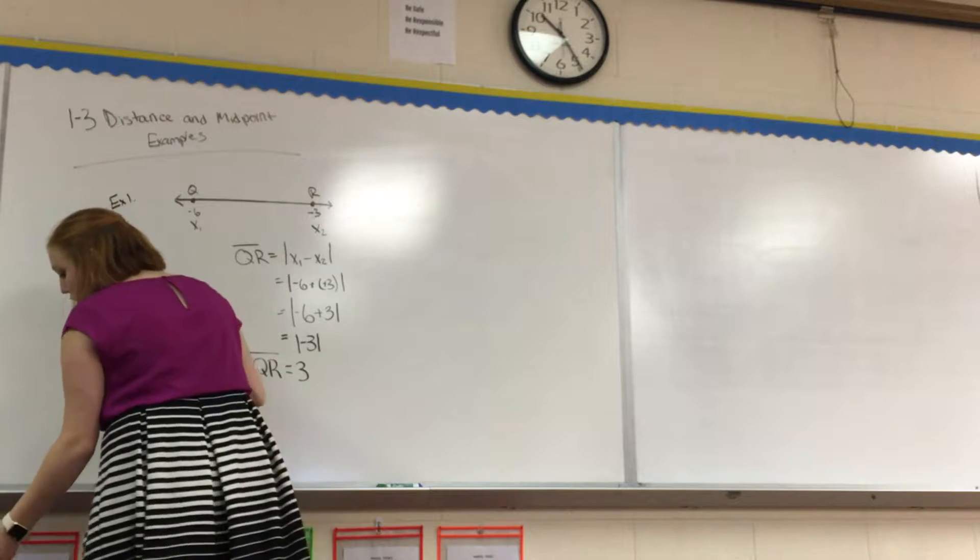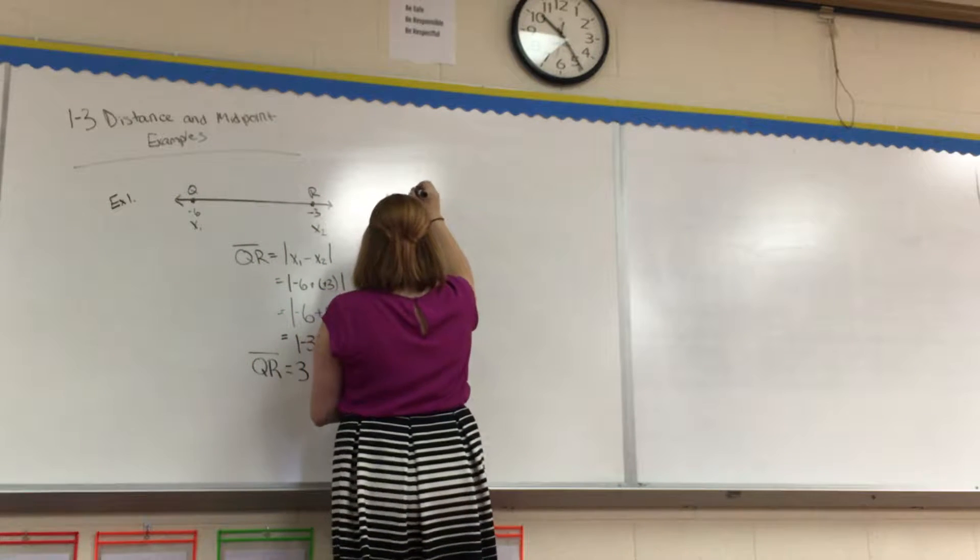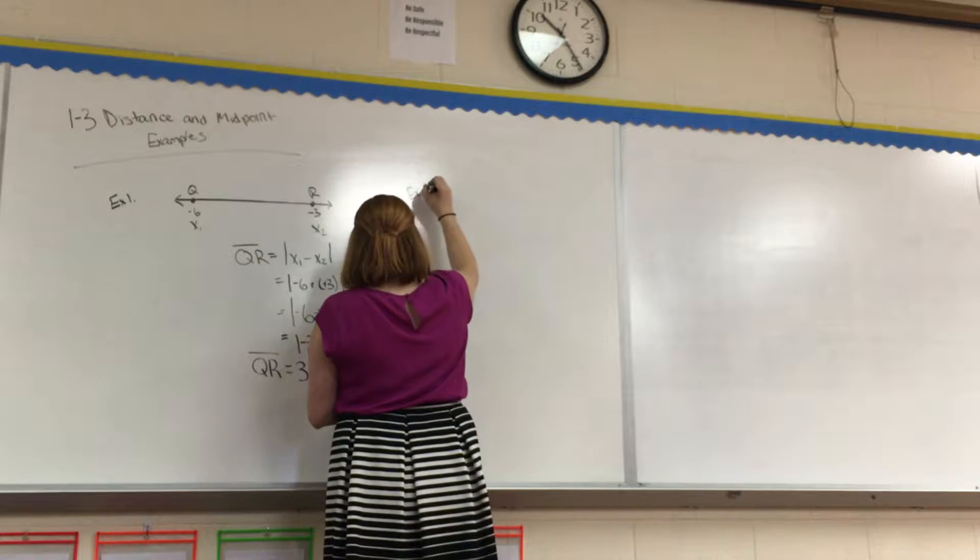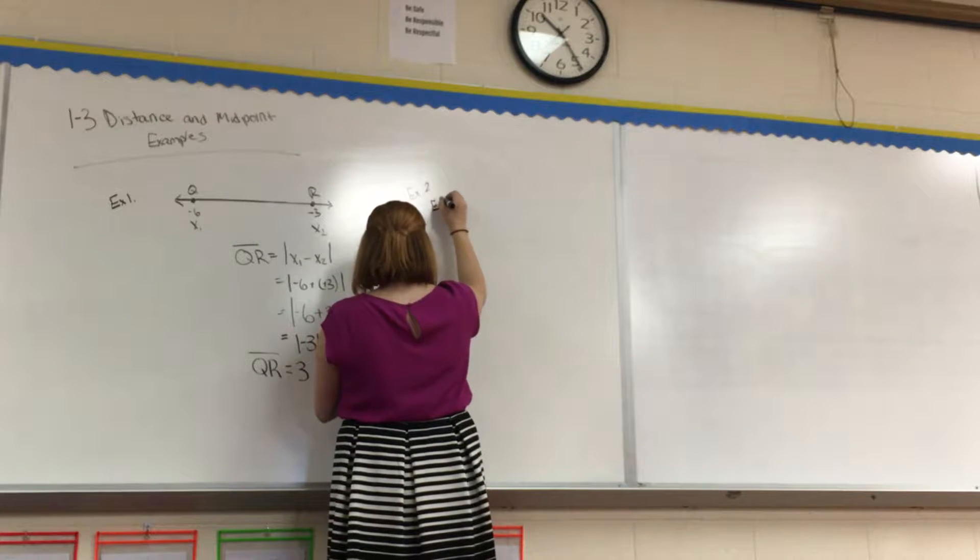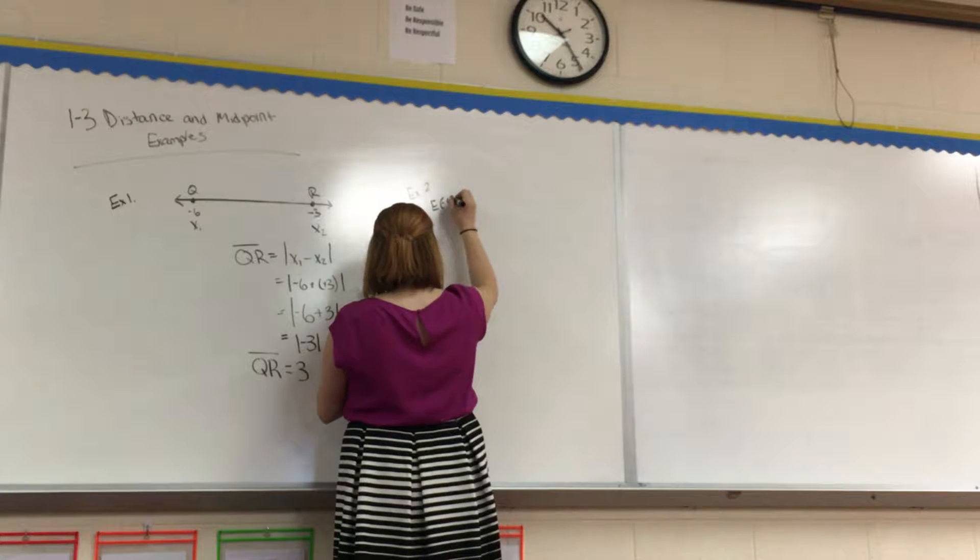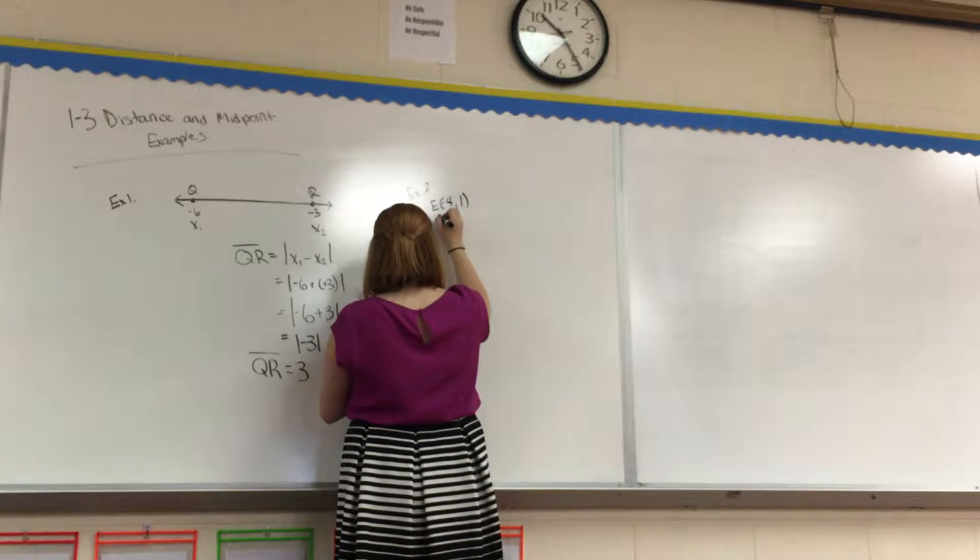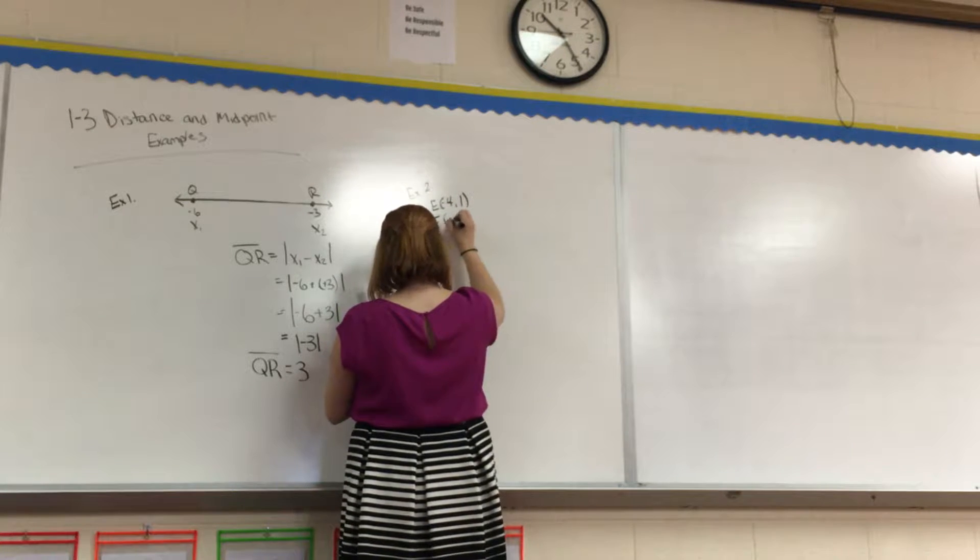Let's move on to example 2. We're going to find the distance on a coordinate plane. So we know E is an ordered pair, negative 4, 1, while F is the ordered pair 3, negative 1.